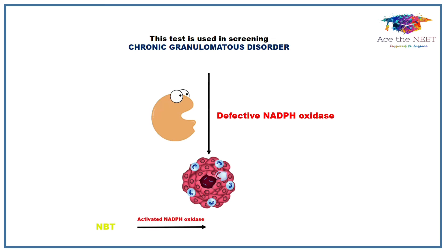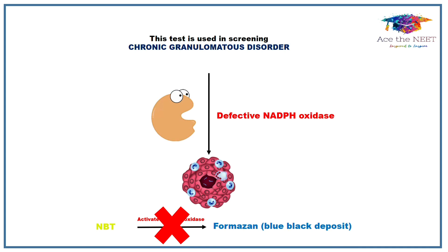In chronic granulomatous disease, the nitro blue dye will not turn into a blue-black color; instead it retains its original color. This indicates a defect in NADPH oxidase within the neutrophils.